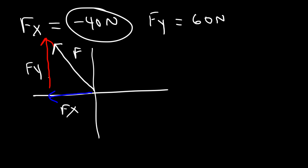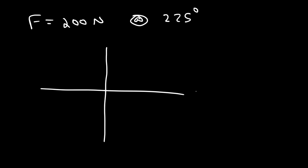So if you know the components, you can describe the vector. Let's say if f is 200 newtons, but at an angle of 225 degrees. So if you have to graph it, this is 0, 90, 180, and 270. So 225 is in quadrant 3. So the vector is going to be over here. And this is an angle of 225 relative to the x-axis.